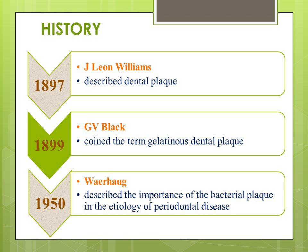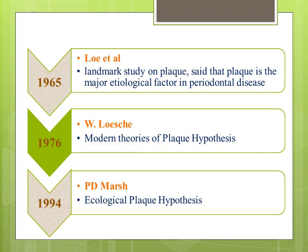Coming to the history. In 1897, it was Leon Williams who described dental plaque. In 1899, G.V. Black coined the term gelatinous dental plaque. In 1950, Vaerog described the importance of bacterial plaque in the etiology of periodontal diseases. Loesch et al. did a landmark study in 1965 stating plaque is the major etiological factor in periodontal disease. In the 1970s, Walter Loesch gave the modern theories of plaque hypothesis, and in the 1990s, P.D. Marsh introduced the ecological plaque hypothesis.